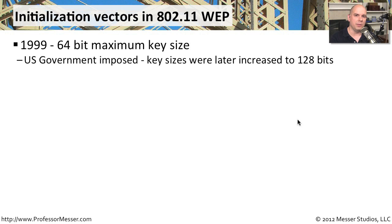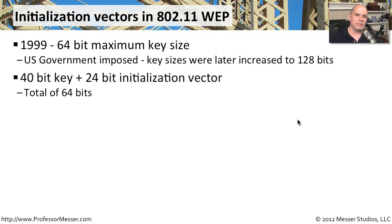They wanted to keep that small so that they could ultimately decrypt that information. Later on, that key size was increased to 128 bits. But at the current time when it was implemented, 64 bits was all you had. But of course, the 64 bits was including your key and the initialization value. So what we ended up having was a 40-bit key and a 24-bit initialization value to make up those 64 bits.